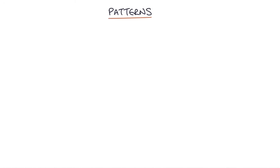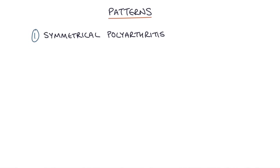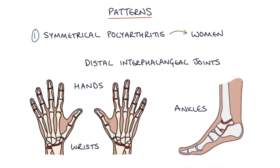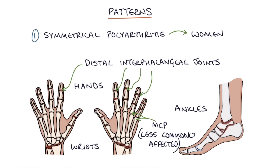There are a few patterns of the condition, and it doesn't affect a single pattern of joints in the same way that osteoarthritis or rheumatoid arthritis do. One pattern is a symmetrical polyarthritis that presents similarly to rheumatoid arthritis, is more common in women, and affects the hands, the wrists, the ankles, and the distal interphalangeal joints of the fingers. The MCP joints, or knuckles, are less commonly affected, unlike in rheumatoid arthritis.